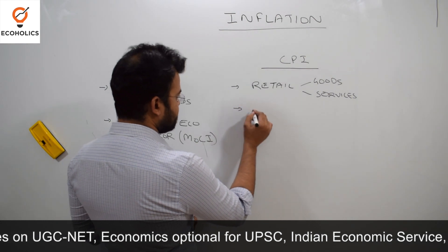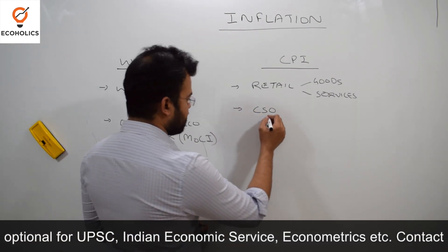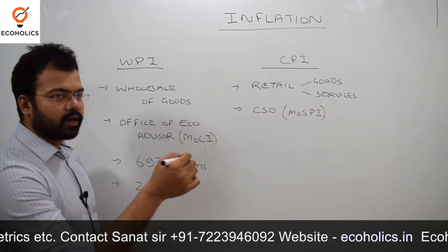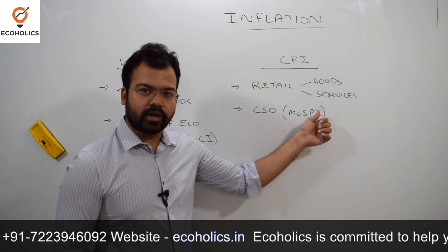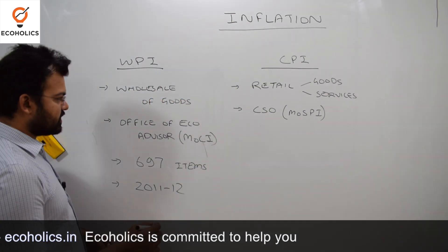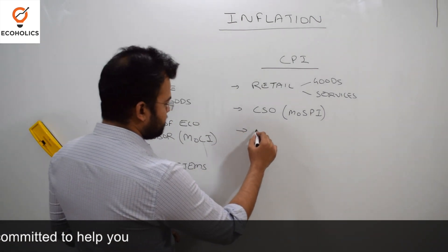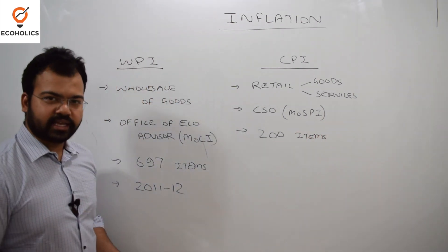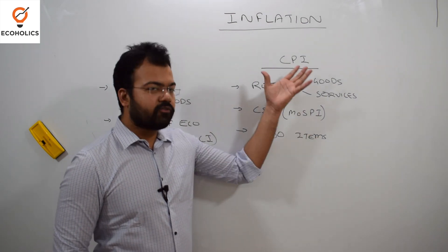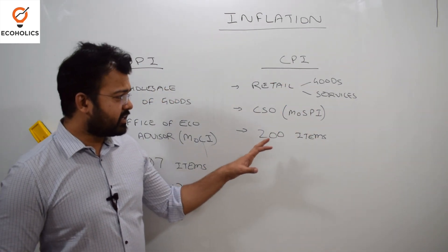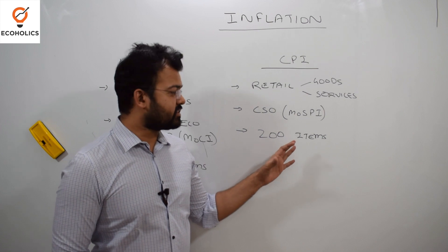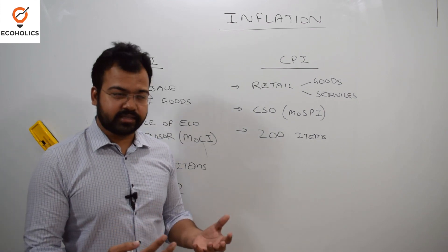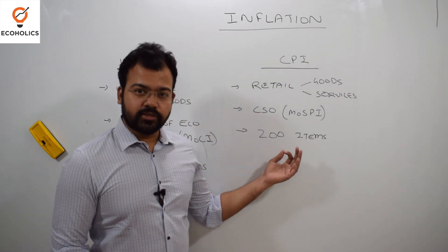Who calculates CPI? That is the Central Statistical Office under the Ministry of Statistics and Programme Implementation, popularly known as MOSPI. There are 200 items in the CPI basket — 200 items of common consumption throughout the country. Around 40-plus items are considered food items under it, so if there is a fluctuation in food item prices, you can see a fluctuation in the Consumer Price Index as well.